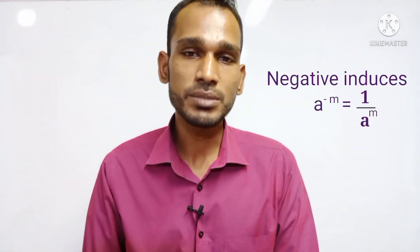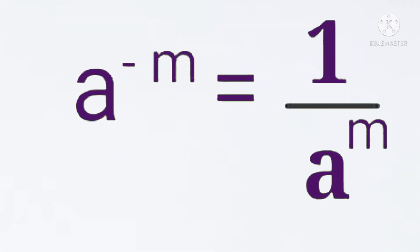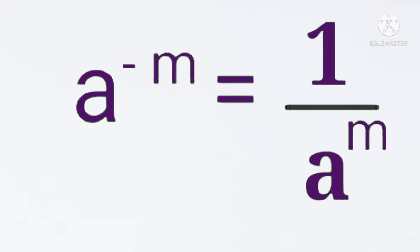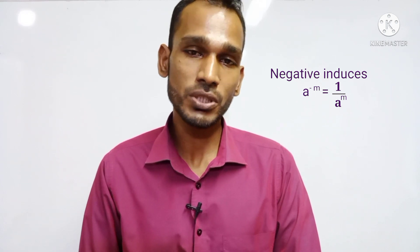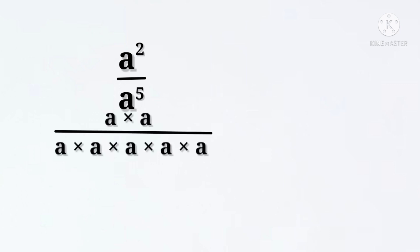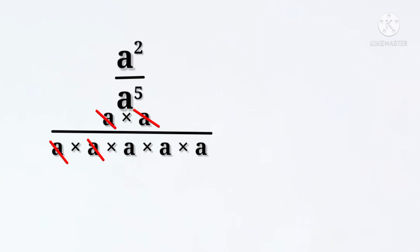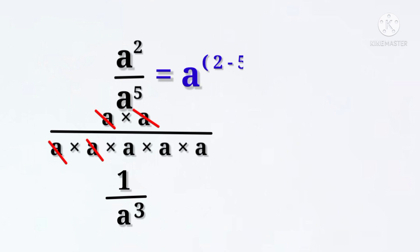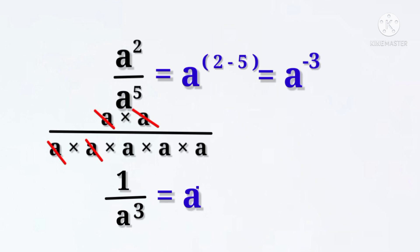Now we can see negative indices. For a negative power: a to the power minus n is equal to 1 over a to the power n. We can see that a negative power gives a positive index in the denominator. Using the division rule: a to the power 2 divided by a to the power 5 equals a to the power 2 minus 5, which is a to the power minus 3. So a to the power minus 3 is equal to 1 over a to the power 3.